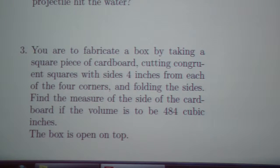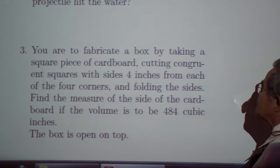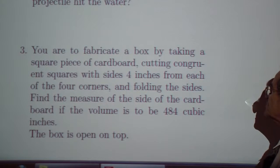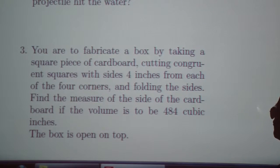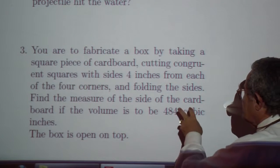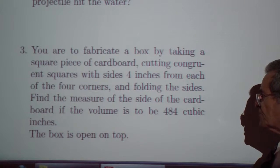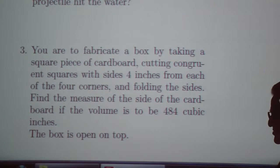Exercise three. You are to fabricate a box by taking a square piece of cardboard, cutting congruent squares with sides four inches from each of the four corners, and folding up the sides. Find the measure of the side of the cardboard if the volume is to be 484 cubic inches, and know that the box is open on top.